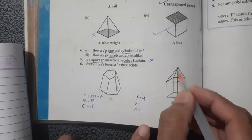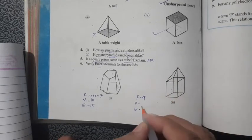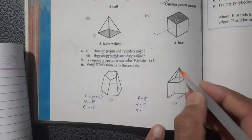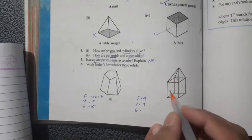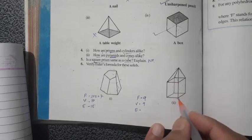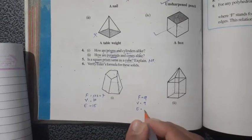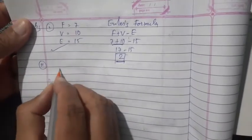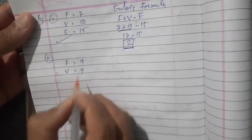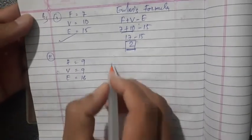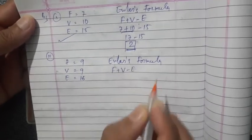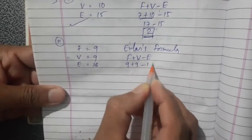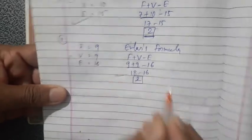Edges of the second solid: four at top, then five, six, seven, eight — eight, then nine through twelve, and at the bottom thirteen through sixteen — sixteen edges total. So F = 9, V = 9, E = 16. Check: F + V − E = 9 + 9 − 16 = 18 − 16 = 2. Euler's formula is verified.